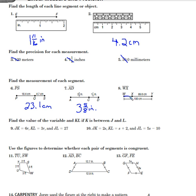We're trying to find WX, that's the segment right here. We have to do a little subtraction. 100 minus 89.6 centimeters is 10.4 centimeters.